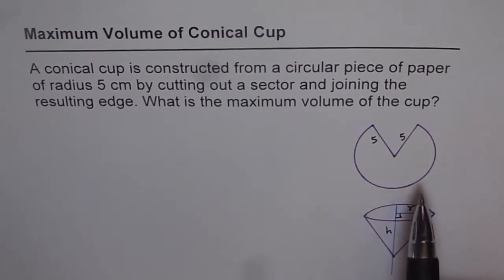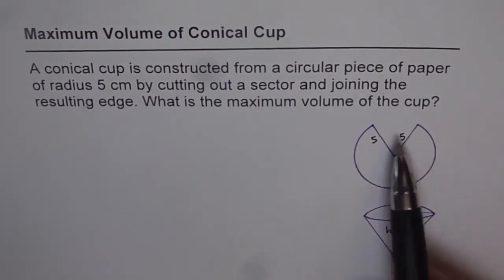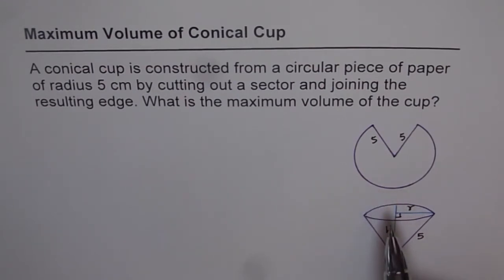We have given you a diagram here to help. So this is the circular piece of 5 cm to the radius. You cut out a sector like this and fold it to make a paper cup. And you need to find out the maximum volume of the cup. So I would like you to pause the video, do the solution and then look into my suggestions.